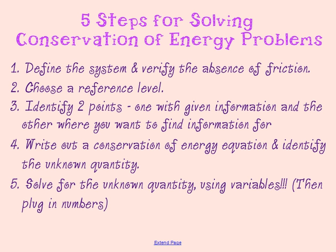In the second step, we'll choose a reference level, or a point where the potential energy is zero. Then we'll identify two points: one will be our initial point and one will be our final point. From one of those points we'll be given information and from the other we're trying to find something. Then we'll write out a conservation of energy equation, identify the unknown quantity, solve for it using variables, and plug numbers in.